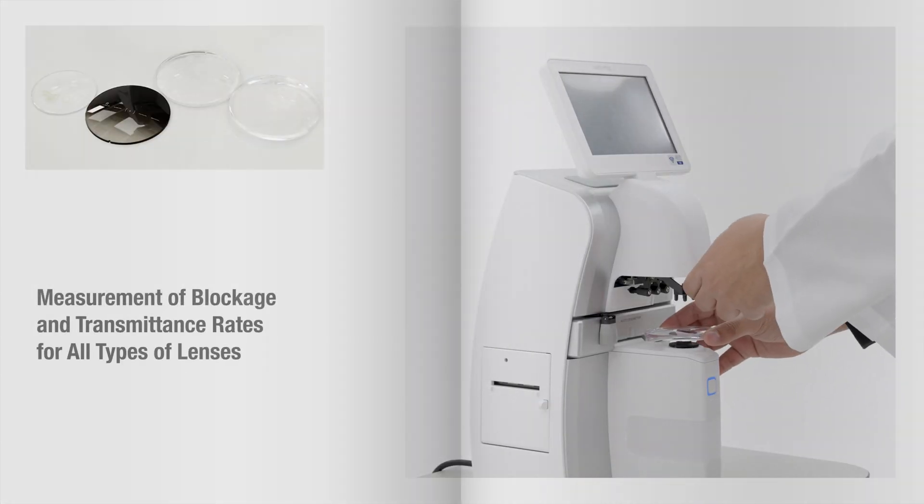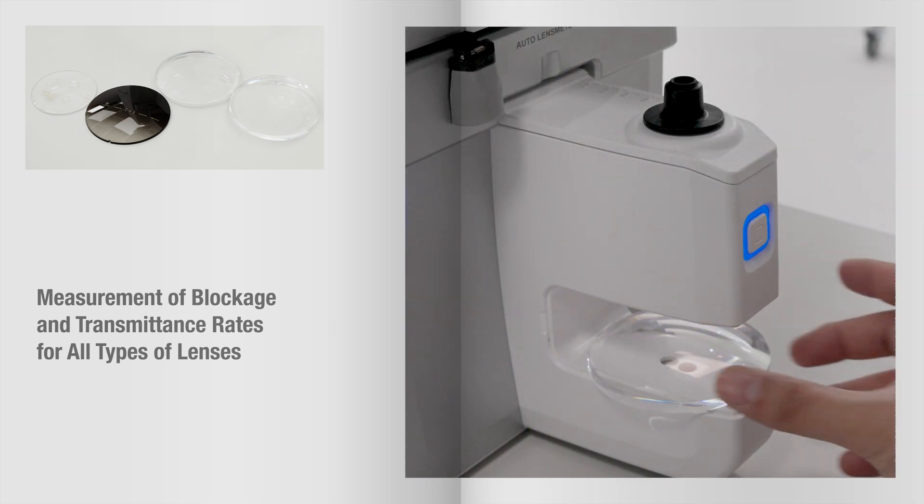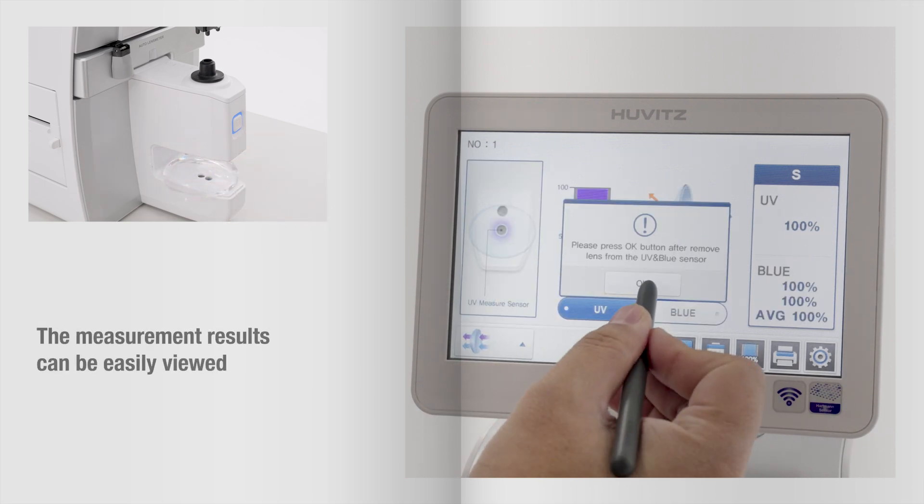The blue light blocking rate, visible light transmittance, and UV transmittance are all conveniently measured. And the measurement results can be easily viewed.